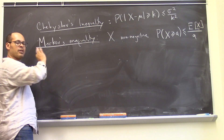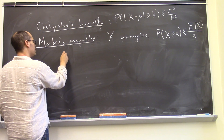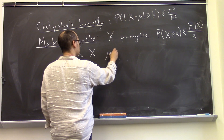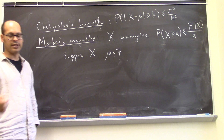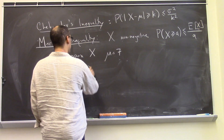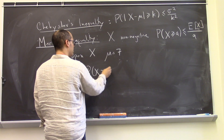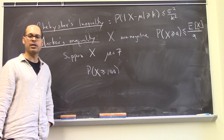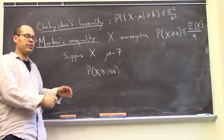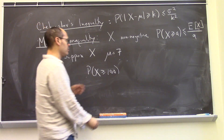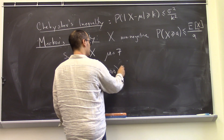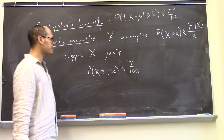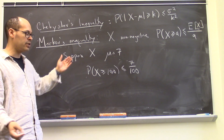To make Markov's inequality concrete: suppose you have a random variable X with expected value 7. Then you could ask, what's the probability that X is at least 100? If the mean is 7, then the probability of X being at least 100 can't be too big, or else that would weigh the expectation much higher than 7. In fact, Markov says it's no more than 7 over 100. So there's a reasonably low probability that you're that far out.